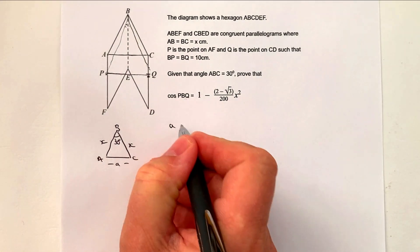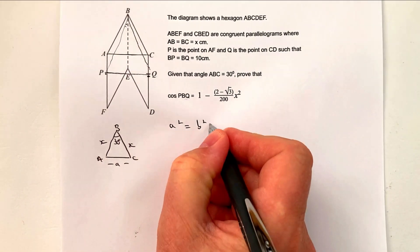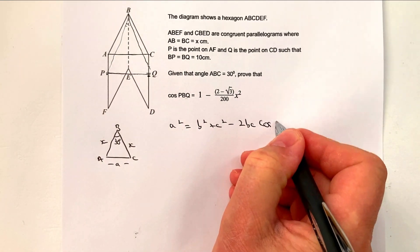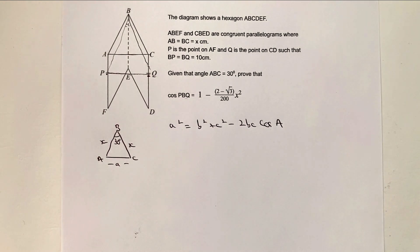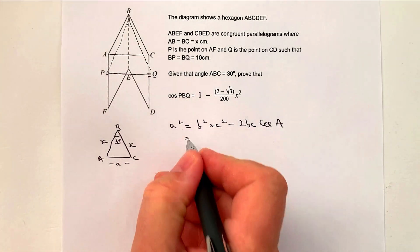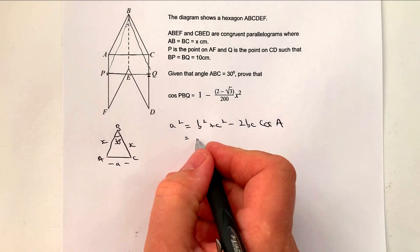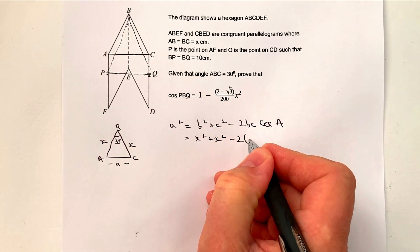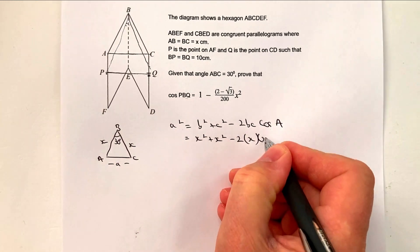So we can write this as a squared equals b squared plus c squared minus two bc cosine of A. Okay, so let's plug in a bit of information. Well, b is going to be x squared plus x squared minus two times x times x.